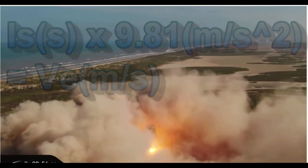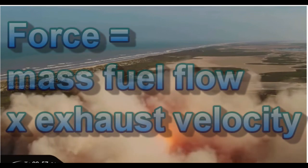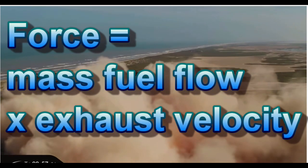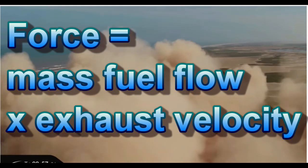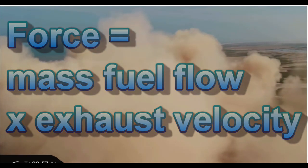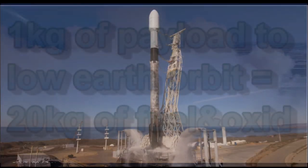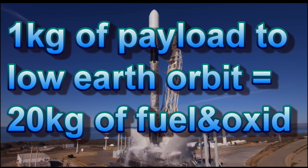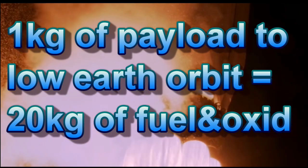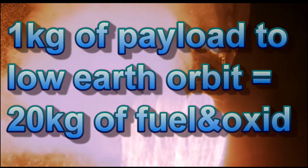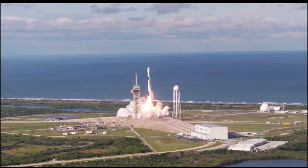The force exerted by the engine is determined by the amount of propellant that can be cycled through the engine in a given amount of time, something we call mass fuel flow, times the exhaust velocity. Current rocket engine technology requires that for every kilogram of payload we want to put into Earth orbit, we will need about 20 kilograms of propellant, so only about 5% of a rocket will make it into orbit.